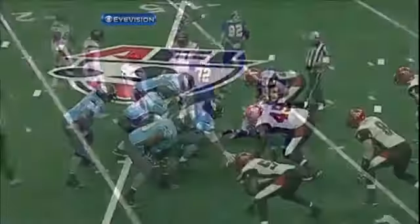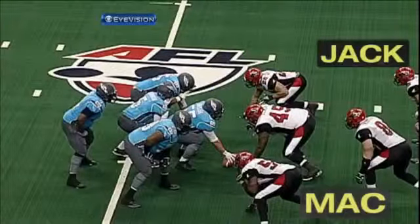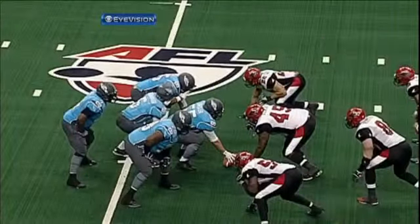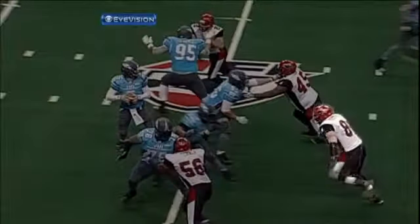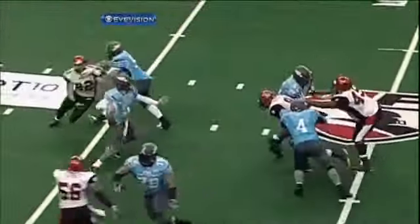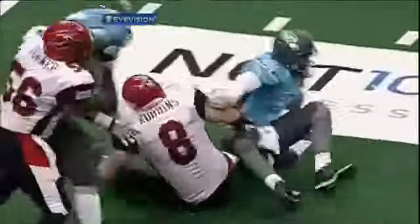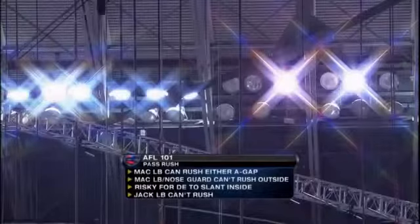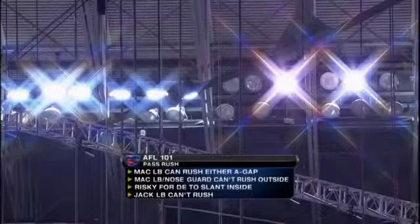We've talked nose guard, we've talked defensive end. Let's not forget about the Mack linebacker. When you open up the middle of the protection, the Mack has the fullback on an island and can have a two-way go rushing to either A gap. When you're as dynamic a pass rusher as Aaron Robbins is, you can win on either side, and more often than not, the quarterback's going down.